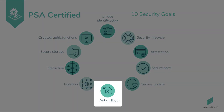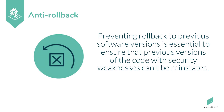As well as adding new features, software updates address known security issues. If a device can install previous versions of software, it opens up the risk of these known security issues being exploited. An anti-rollback mechanism should therefore be added to prevent this form of attack. This feature will ensure that new software versions invalidate older ones. Anti-rollback prevents exploitation of vulnerabilities which have been fixed in more recent versions of software or firmware.